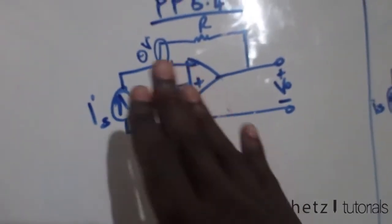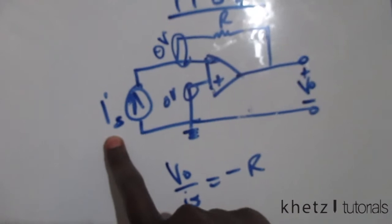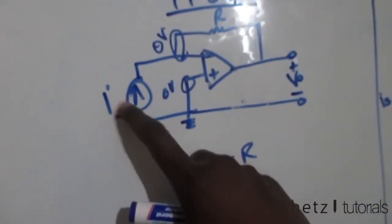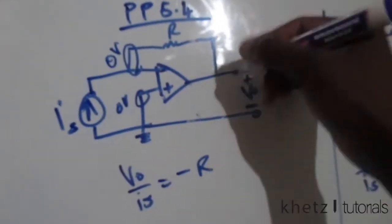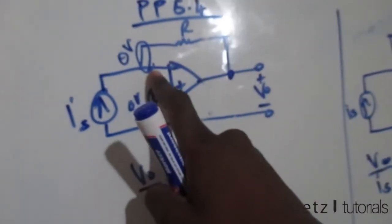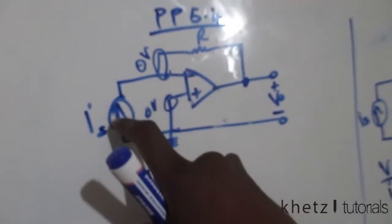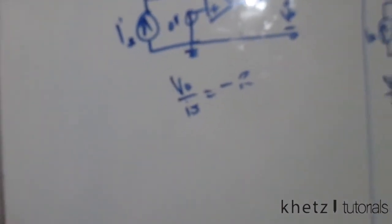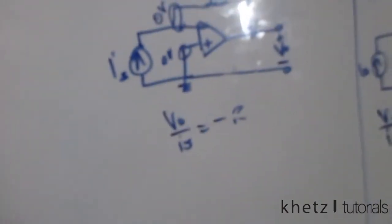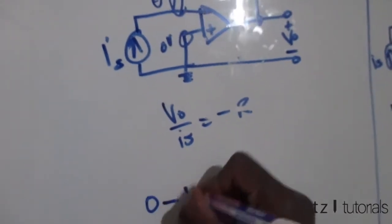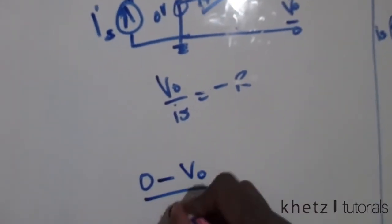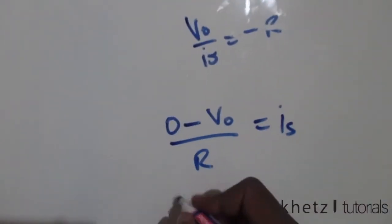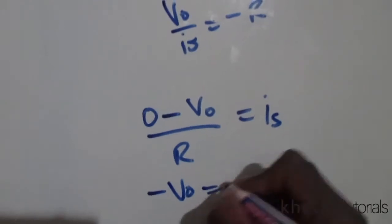Let's find the relationship between is and vo. This current goes all the way until this point because there isn't any current which flows through the op-amp input, so it just flows freely all the way. We can say: zero subtract vo divided by R, which equals is.